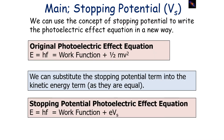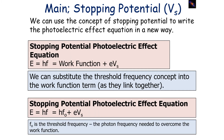We can use this concept to rewrite the original photoelectric effect equation. Previously: photon energy hf = work function + kinetic energy (½mv²). We can substitute the stopping potential term into the kinetic energy term because they are equal, giving: hf = work function + eVs, where Vs is the stopping potential. We can also substitute the threshold frequency concept into the work function term, giving: hf = hf₀ + eVs, where f₀ is the threshold frequency — the photon frequency needed to overcome the work function.